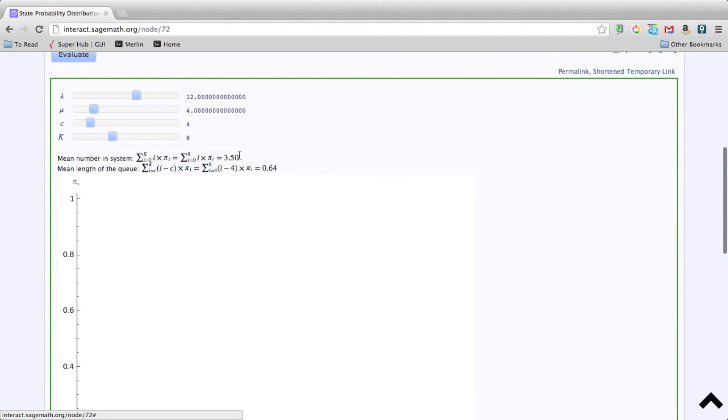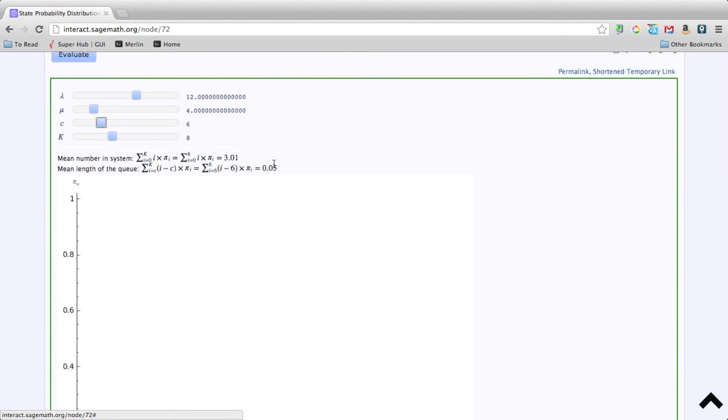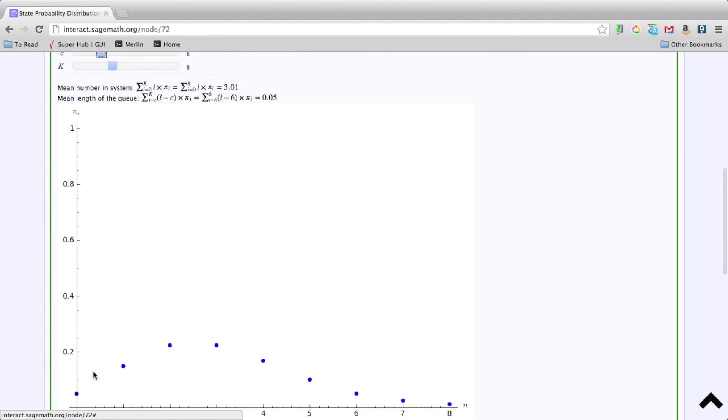Now if we said, alright, let's see if we can change things. I want to bring in another server, say 6 servers. Well now, straight away, the mean length of the queue has disappeared. And this doesn't seem to have changed much. Hopefully you'll see that it, you might be able to notice that it did.